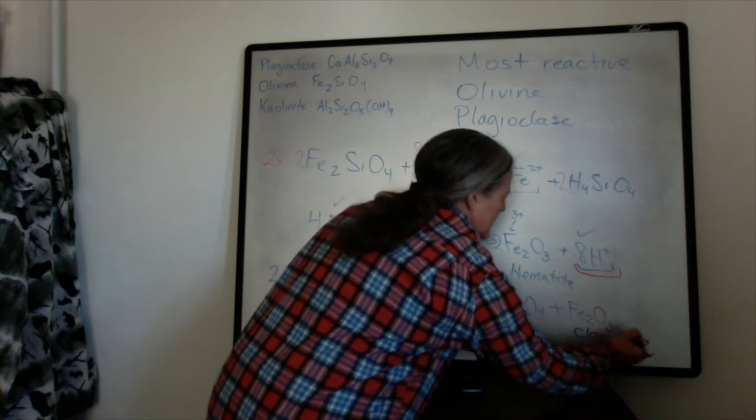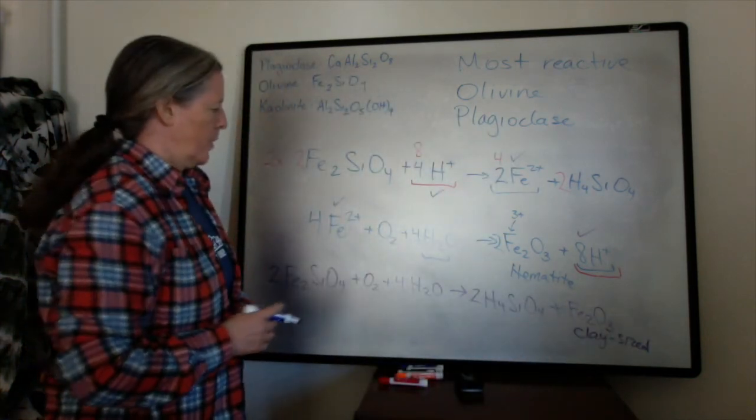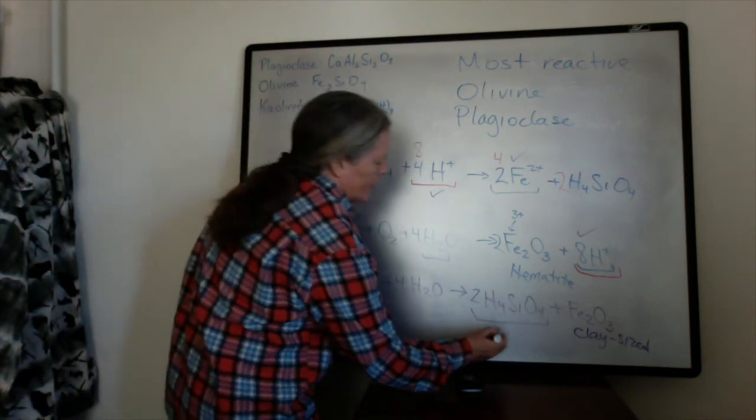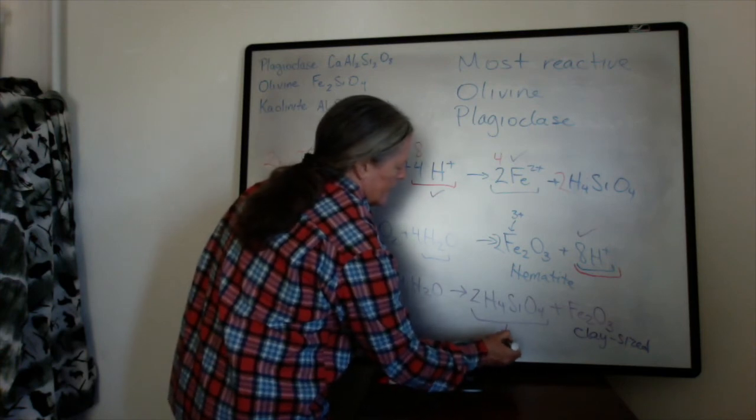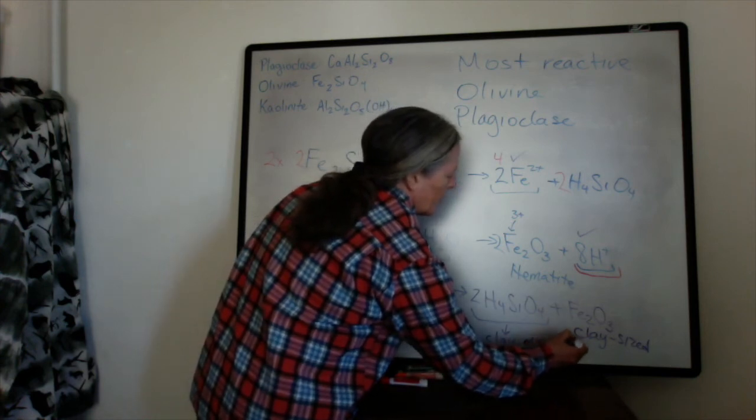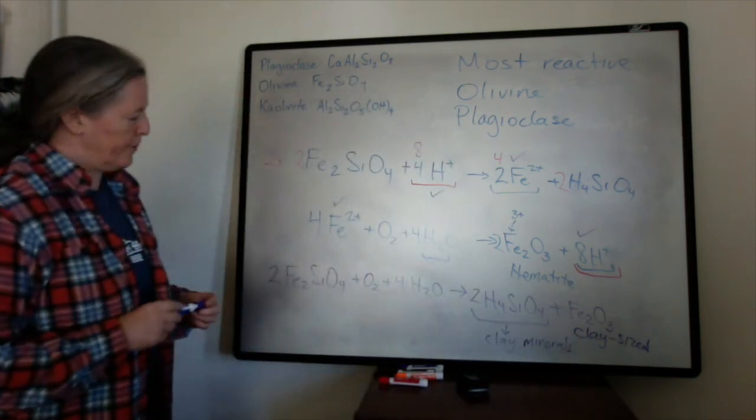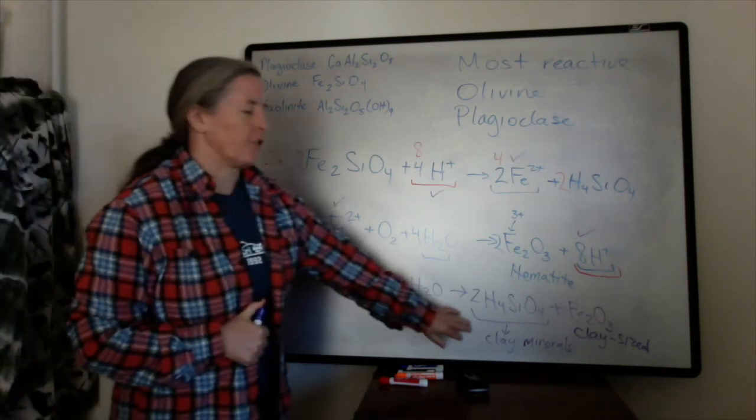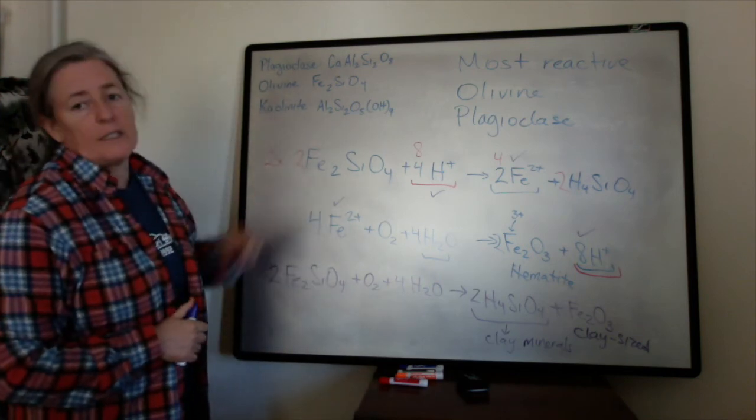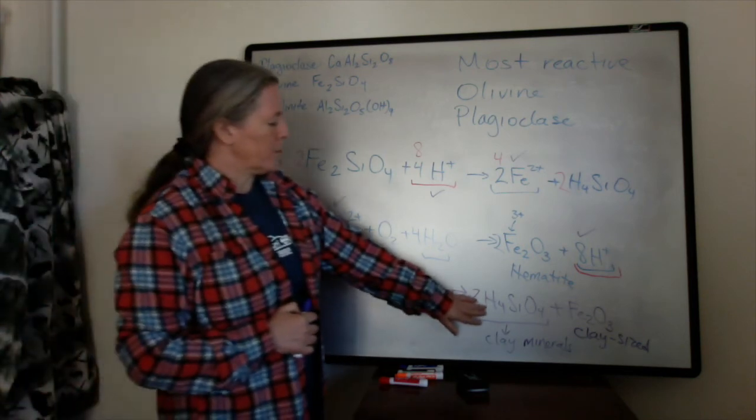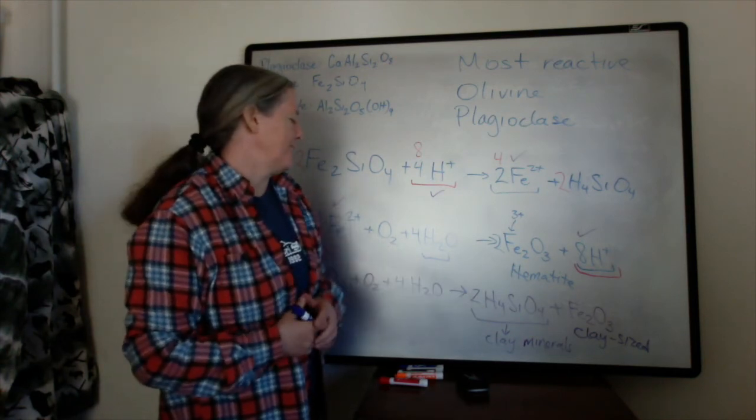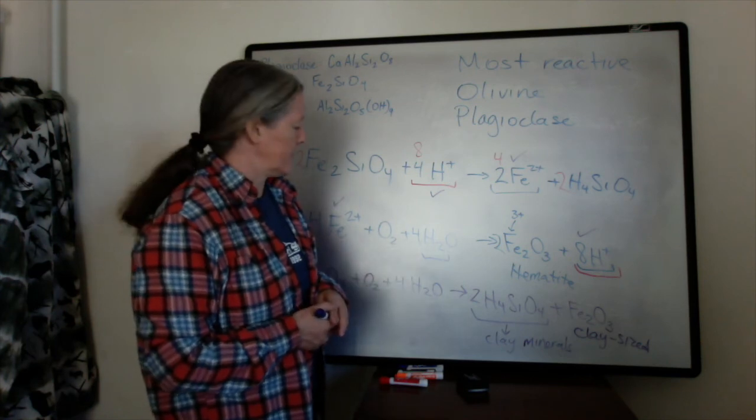So it ends up in suspension in the water. And this silica often goes into clay minerals, but it requires other mineral reactions to actually form these minerals. Because the clay minerals all have aluminum in them and olivine doesn't have that aluminum. It's also possible that this could form microcrystalline quartz or chert or hydrosilica like opal is a hydrosilica mineral.